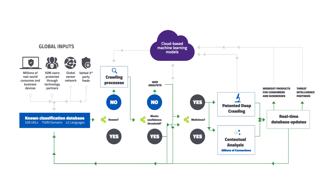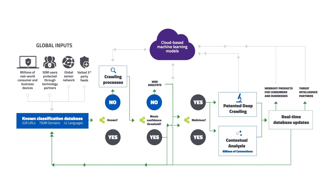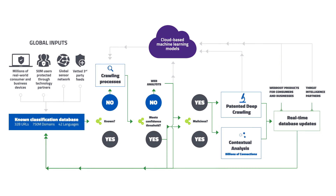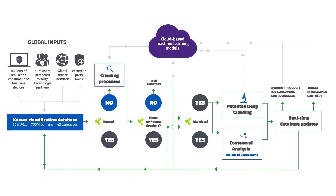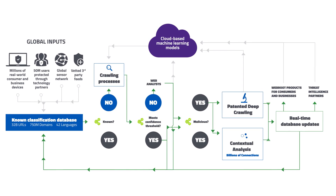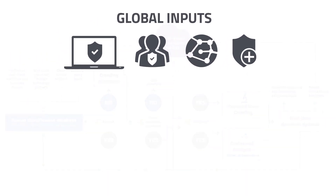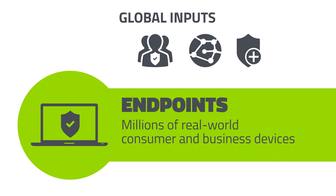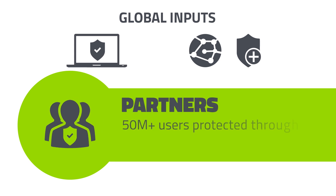This demonstration shows how the Webroot platform uses machine learning to analyze one of those data objects, a newly encountered URL. Our most important source data is our tens of millions of real-world users, including businesses, consumers, and the 50-plus million end-users we protect through our network security and other technology partners.